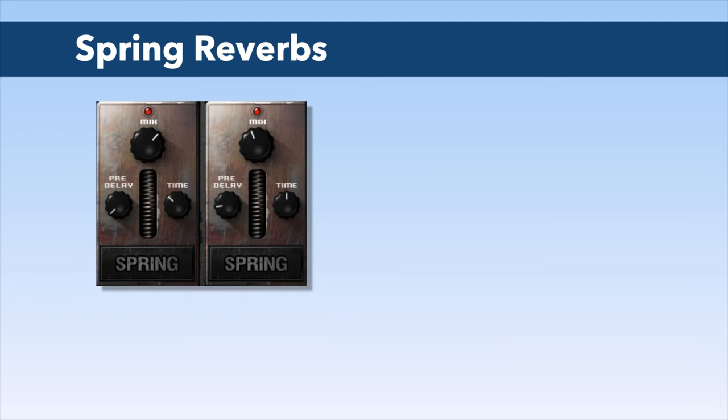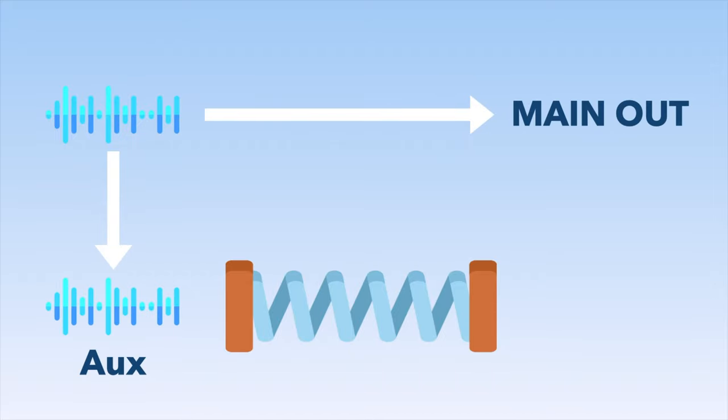Next: spring reverbs. Among all the types of reverb that exist today, spring reverbs have the most unique and special tone, and this is due to the way they produce the reverb. The principle is to send the dry signal into a spring, which emits a vibration that is then sent back into the mix.